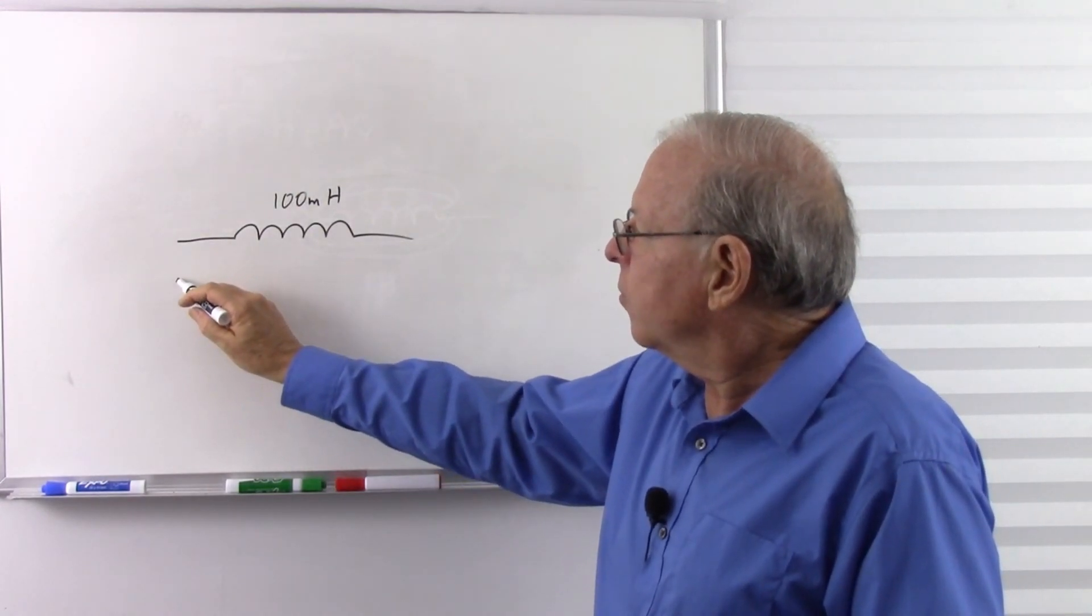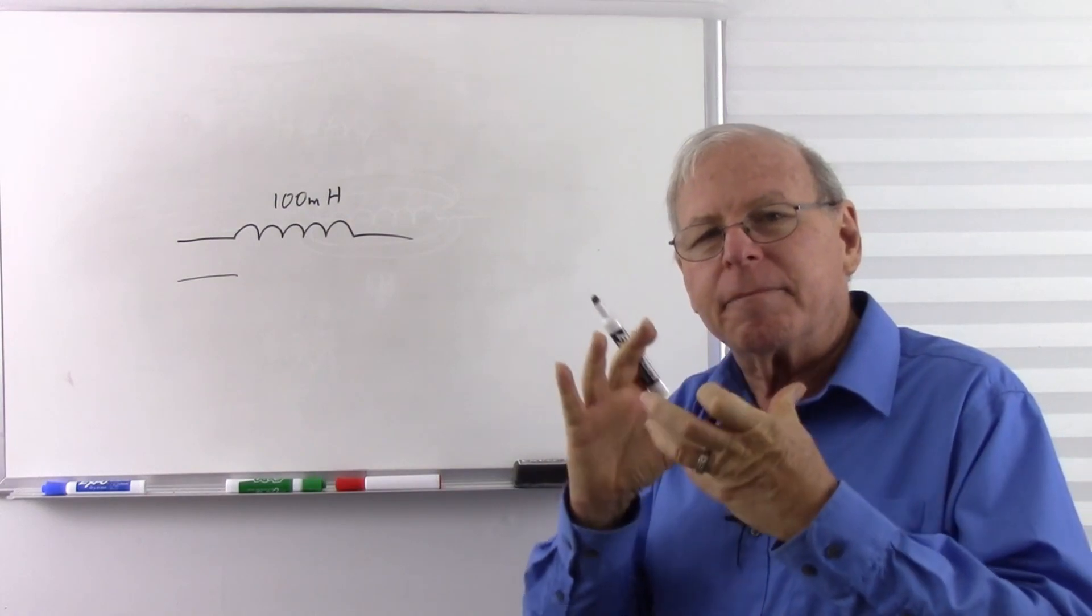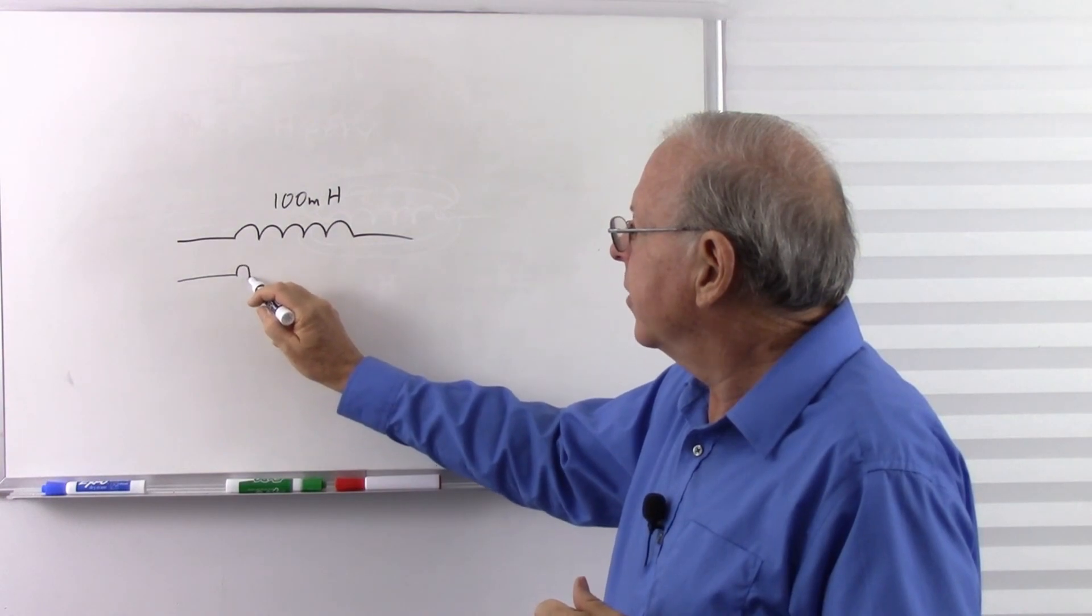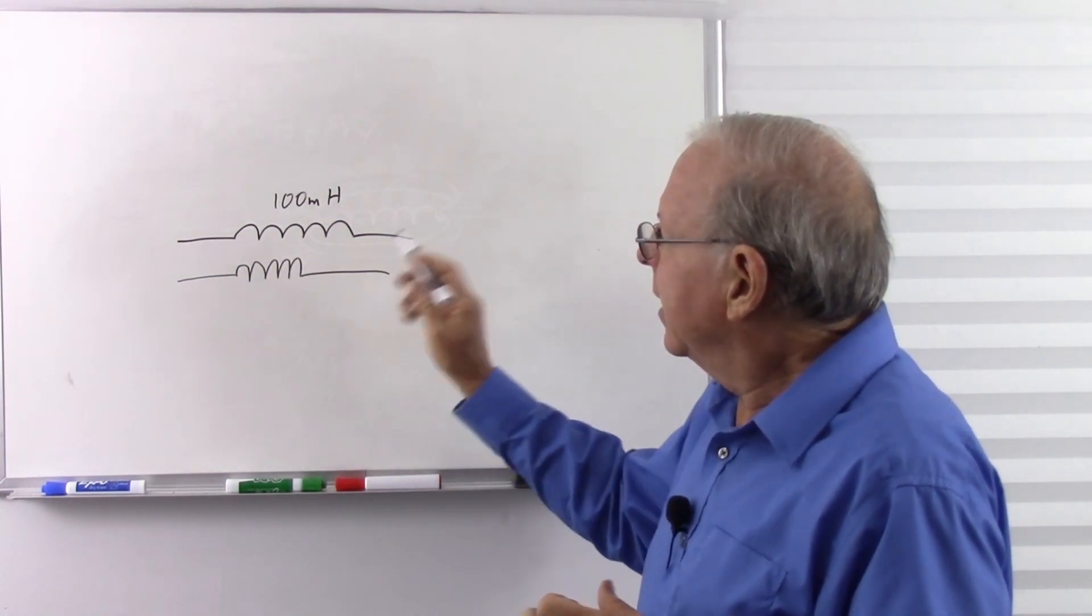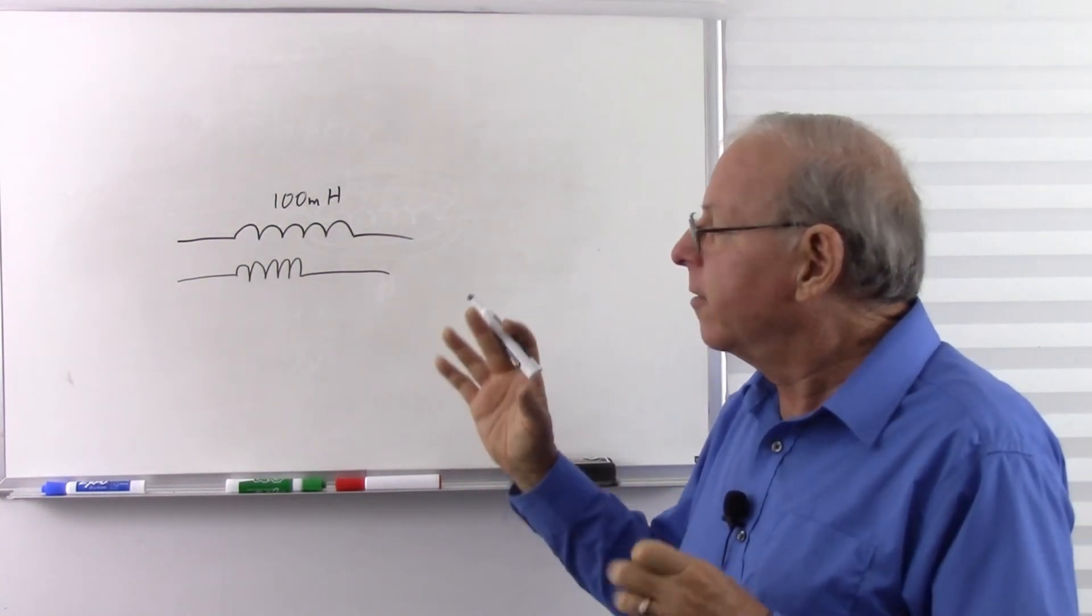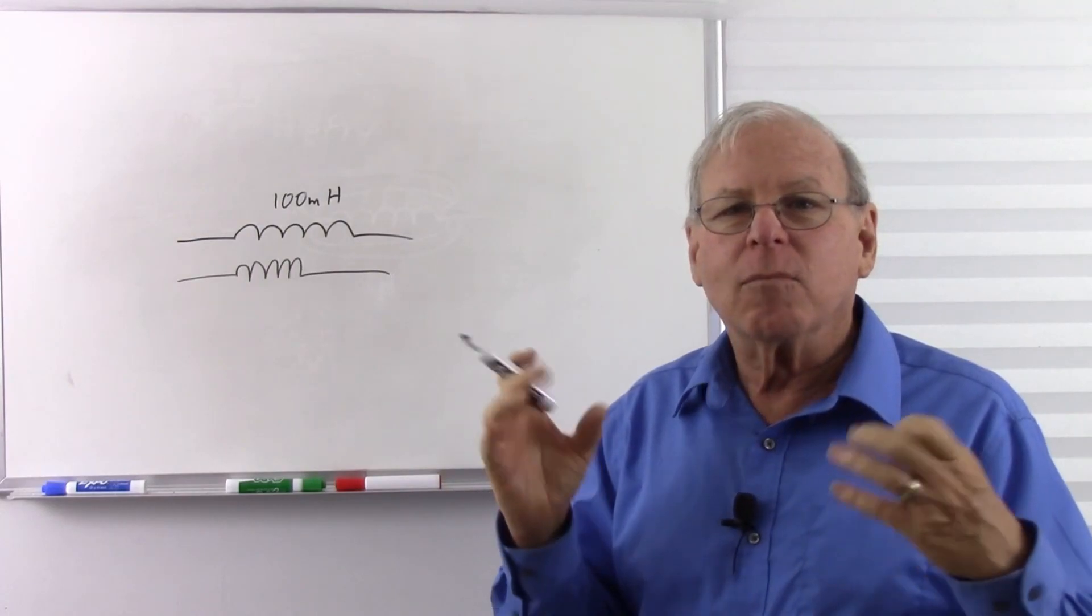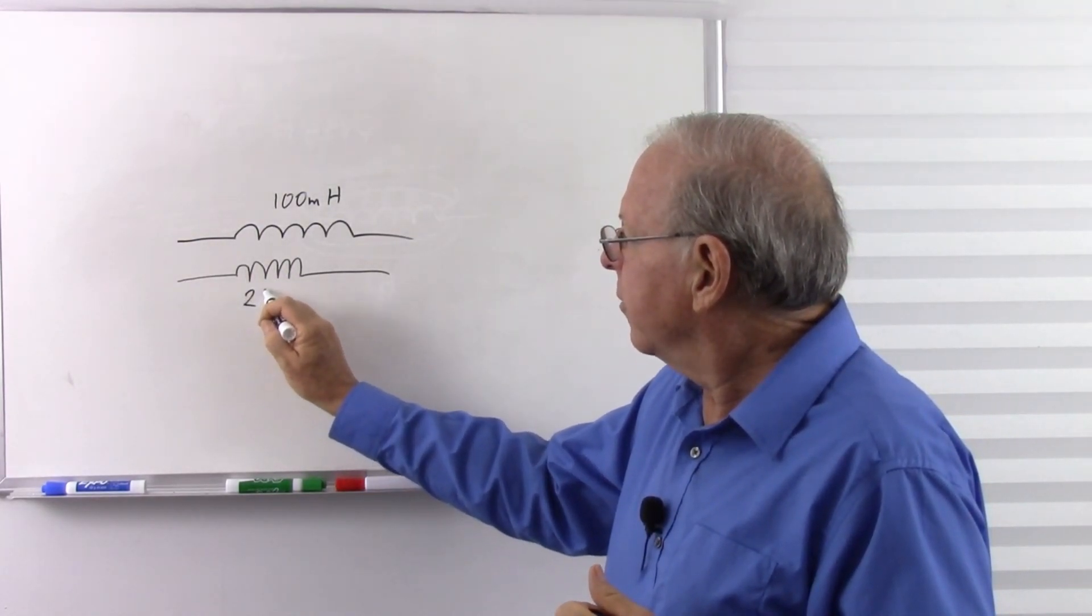If I put those wires closer together, same diameter, same basic amount of wire, but I push them closer together—so they're twice as close together—I'm going to get more interaction between those wires, more magnetic interaction, more inductance. So that'd be like 200 millihenrys.